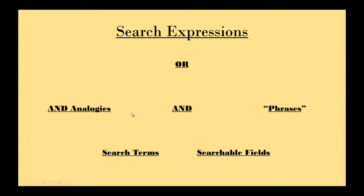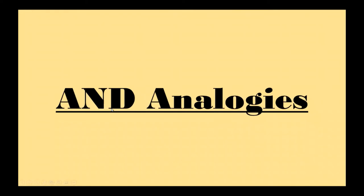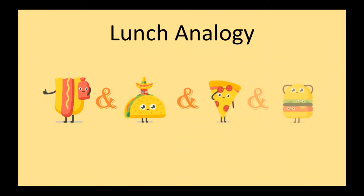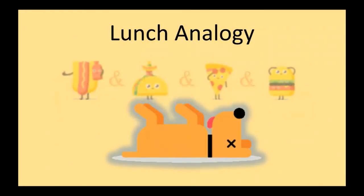And this brings us to AND, which is another search connector we can use in our search expressions. The way AND is used, I think it's appropriate to use an analogy. The way we normally use AND is like in a lunch analogy. So if I'm really hungry and for lunch I want to eat a hot dog and a taco and a pizza and a hamburger — that is a lot of food for lunch. It's way too much, because each time we're adding AND, it's more. It's more items for lunch, so you think AND means more.